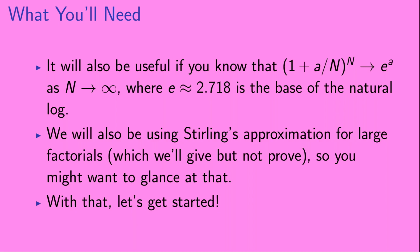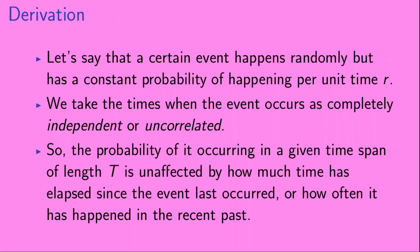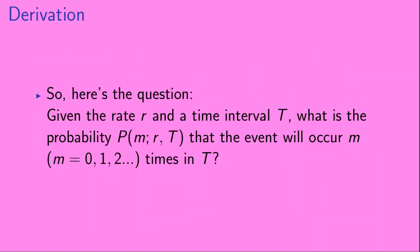Okay, so with that, let's get started. Let's say that a certain event happens randomly but has a constant probability of happening per unit time, which we call r. We take the times when the event occurs as completely independent or uncorrelated, so the probability of it occurring in a given time span t is unaffected by how much time has elapsed since the last occurrence or how often it has happened recently. The question is: given the rate r and a time interval t, what is the probability p of m, given r and t, that the event will occur m times in the interval t, where m can be 0, 1, 2, etc.?